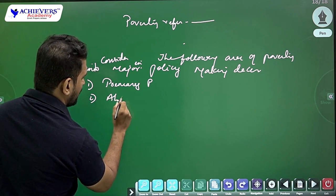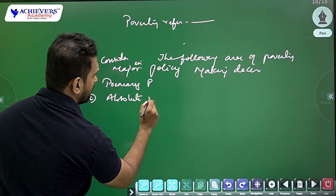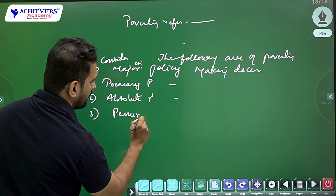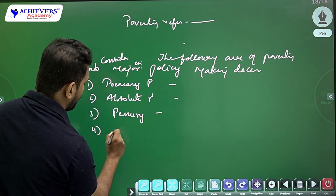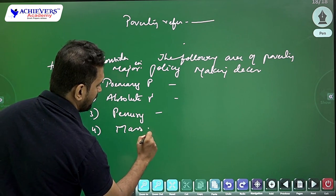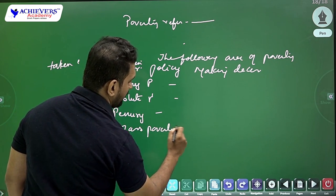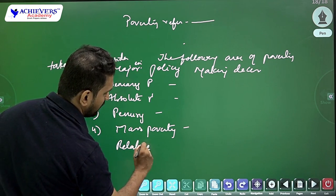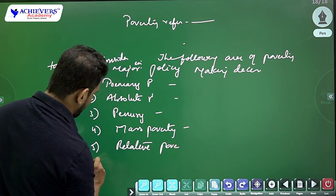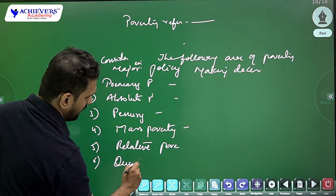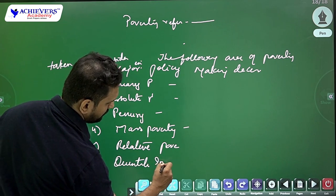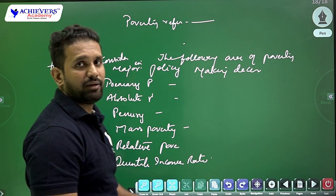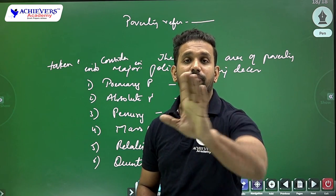Then I will write 'the following are the major types of poverty taken into consideration in major policy-making decisions': number one — primary poverty; number two — absolute poverty; number three — penury; number four — mass poverty; number five — relative poverty; number six — quintile income ratio. After writing all of this in a beautiful manner, you should also give a small flowchart — that will definitely make the examiner say 'wow, here this candidate has done some work.'